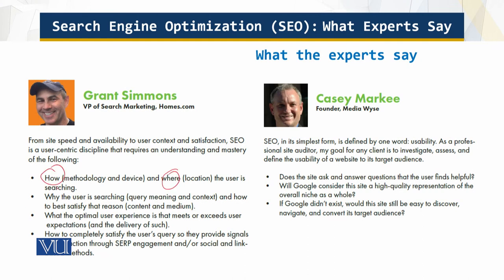More experts say: consider how and where — the location — the user is searching, why they are searching, what is optimal, and how to completely satisfy them. These points are similar to the ones presented before. This is more Google-specific: if Google didn't exist, how would results be discovered? Google has not been around forever — there were other search engines also — but what Google has offered is tremendous compared to what other search engines were offering. That is what some of the experts, selected from 60 plus in the text, have to say.